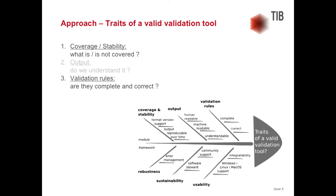We sat down and brainstormed what we consider traits of a good validation tool to embed in our digital preservation processes. We can differentiate qualities based on whether they are at a framework level or a module level. JOV is the framework. We want the framework to be robust, sustainable — someone should take care of it and guarantee it will be around — and the output should be interpretable over time, across different versions, and the tool should be usable.